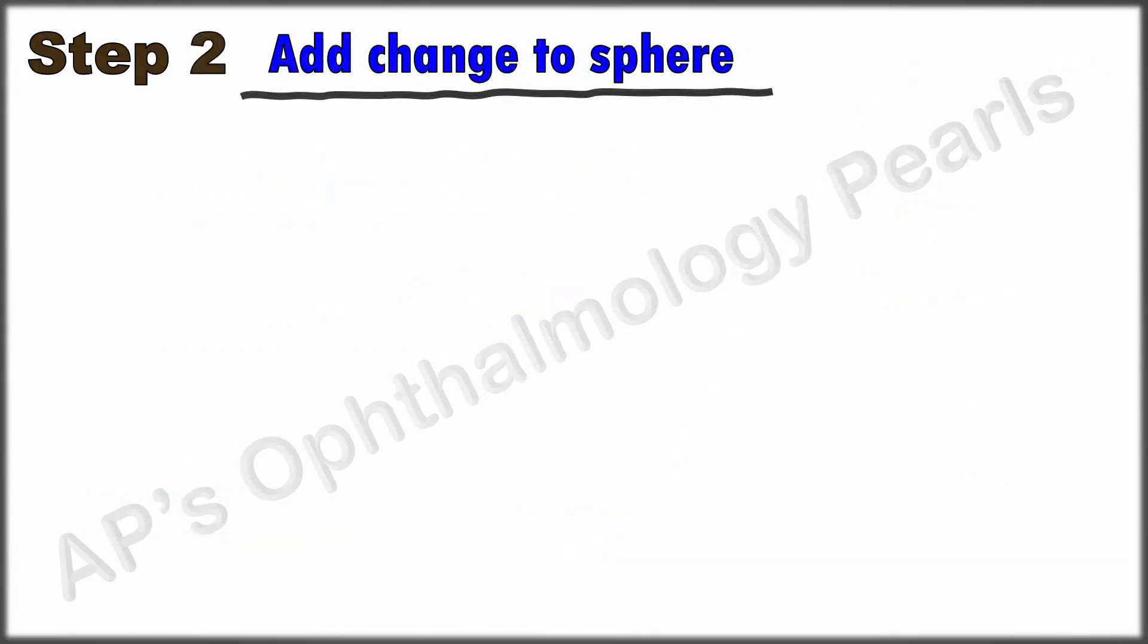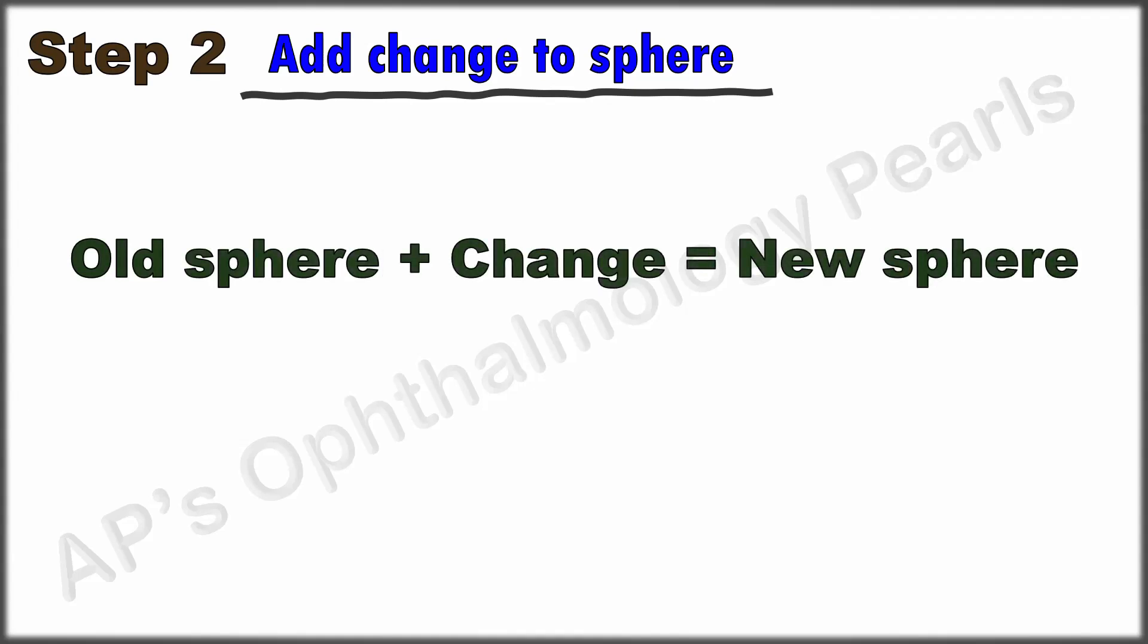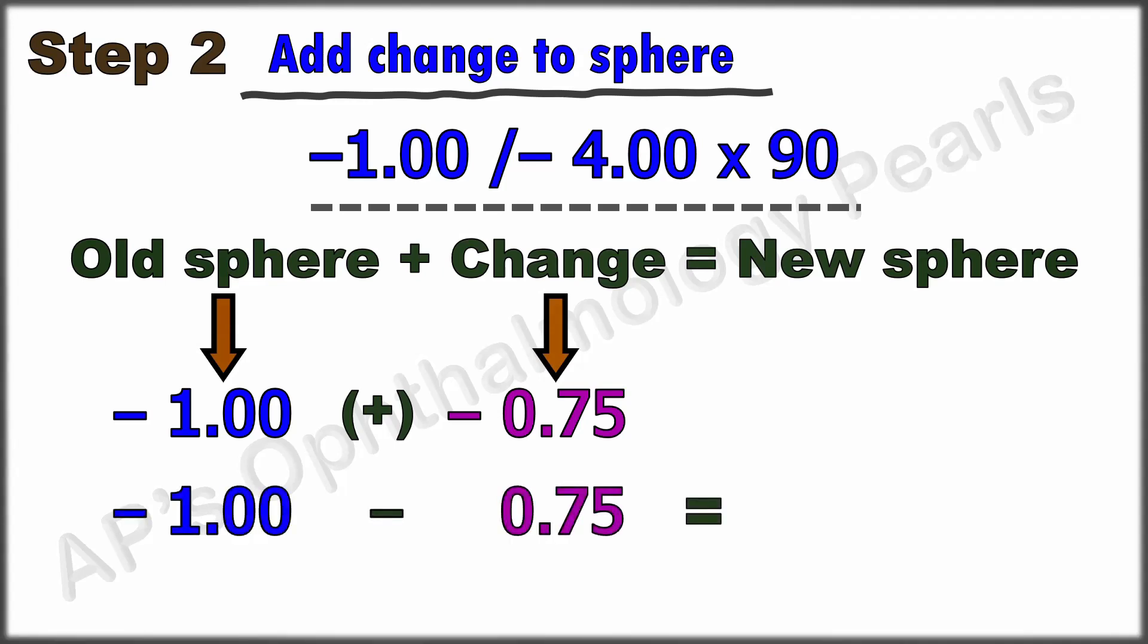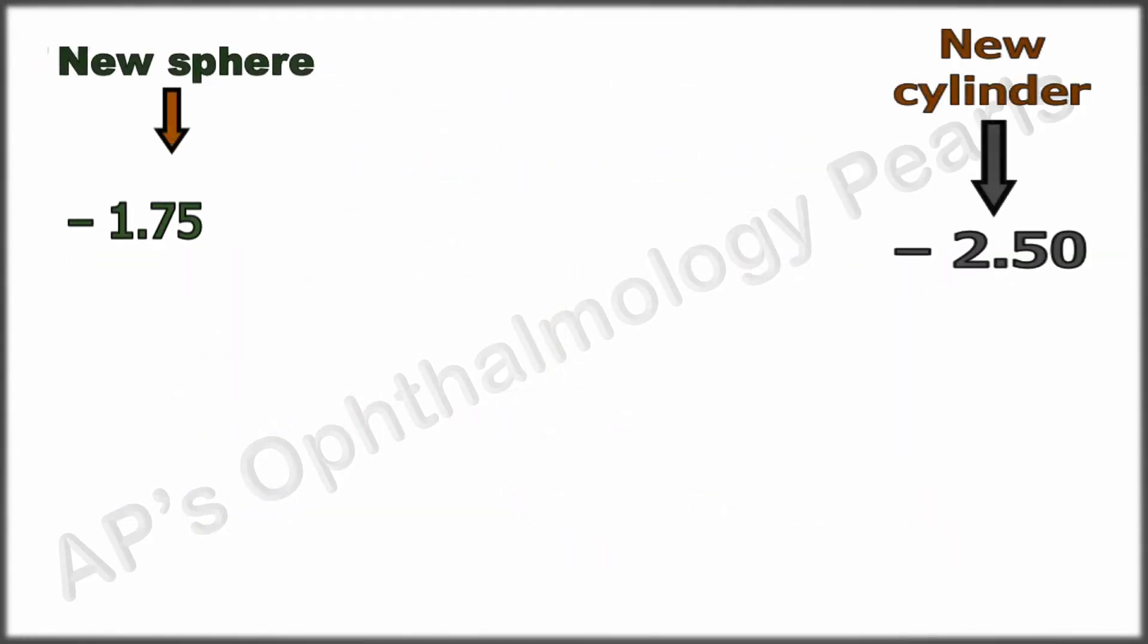Step 2: Add this change to the old sphere to get the new sphere. Substituting in the old prescription, we get old sphere is minus 1. The change which we just calculated is minus 0.75. Adding these two, we get minus 1 minus 0.75, which equals minus 1.75. Making the appropriate substitutions, we have the new prescription.